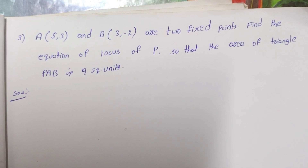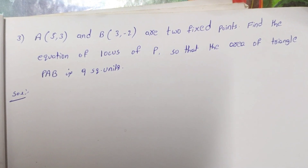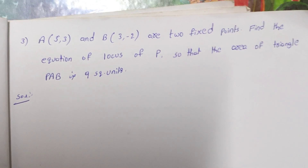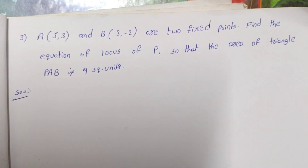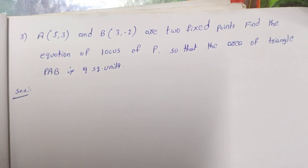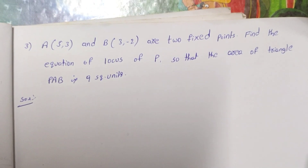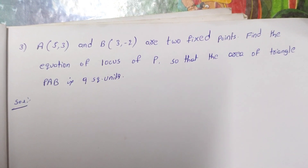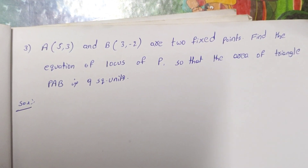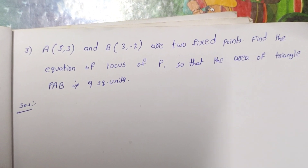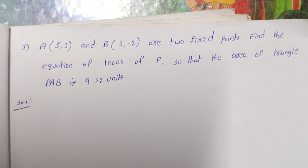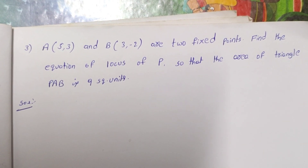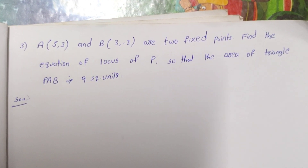If we take the triangle, we will talk about the area. So this is also a very important question. If we have two questions in the overall locus, we will talk about the distance and the area — two problems.